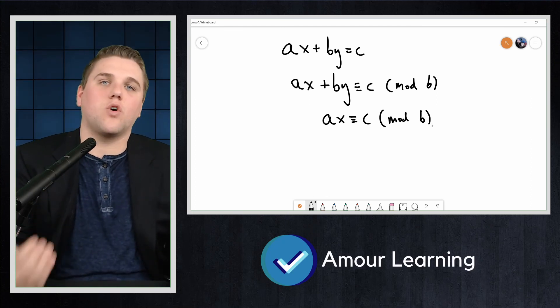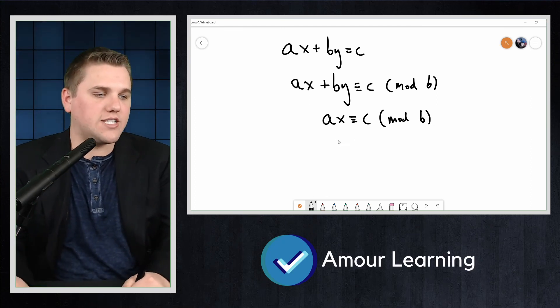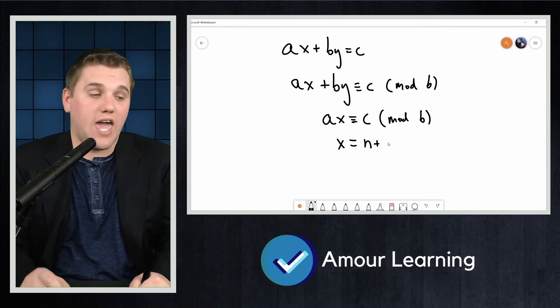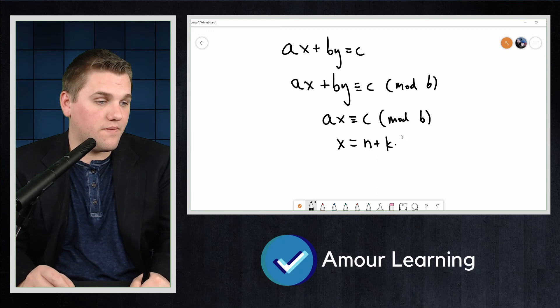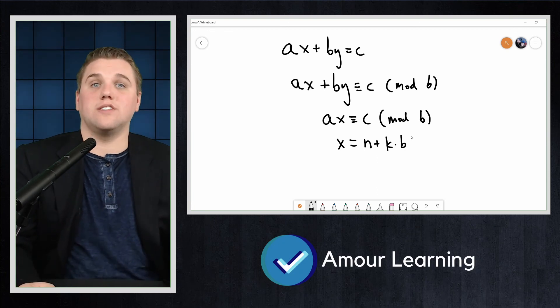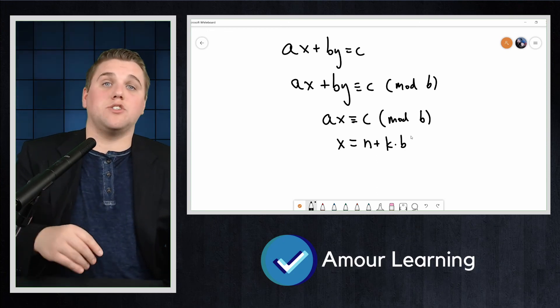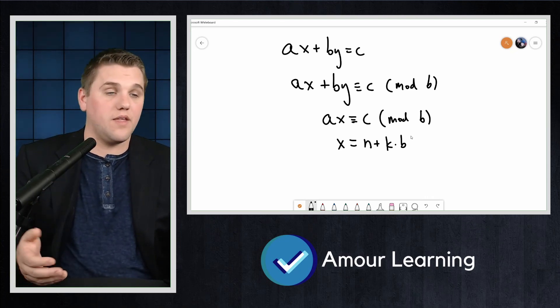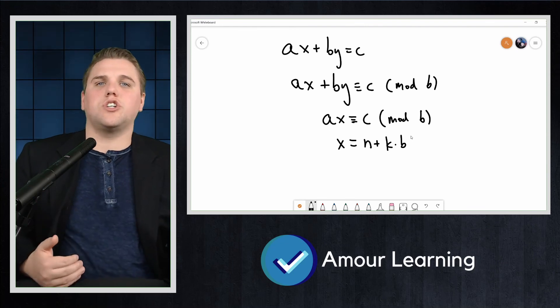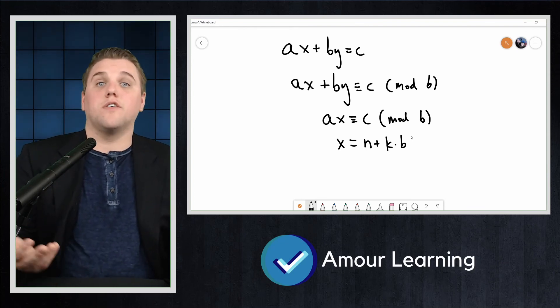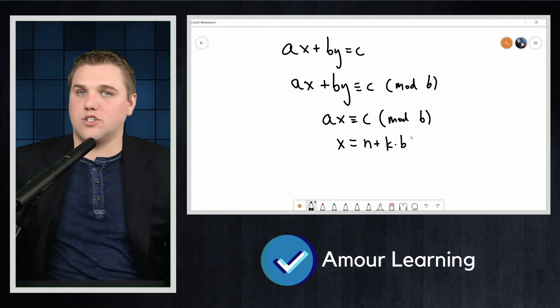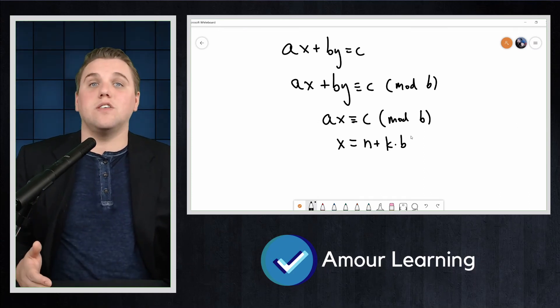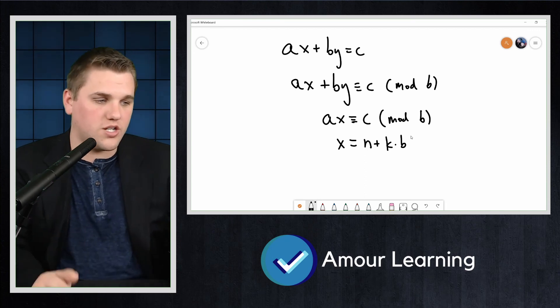The third step is you want to solve the congruence as we've done in previous videos. Write your solution as an equation such as x = n + kb, where k is an integer and n is an integer. The fourth step is we want to plug this into the original Diophantine equation and solve for y.